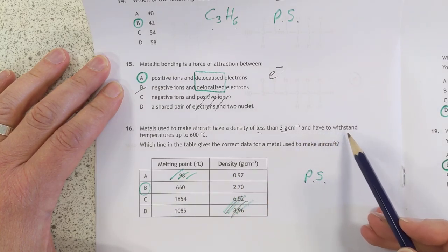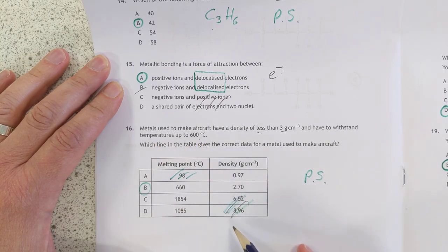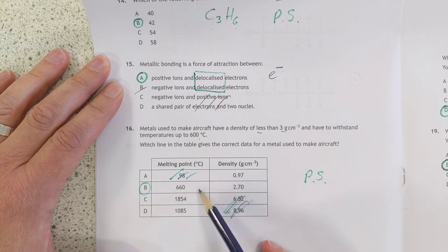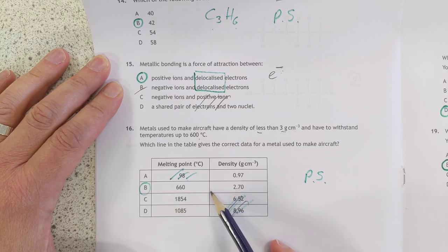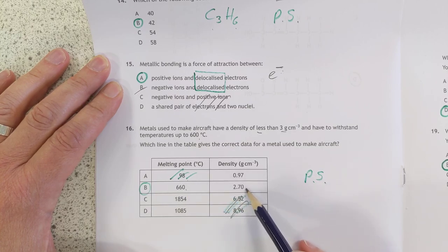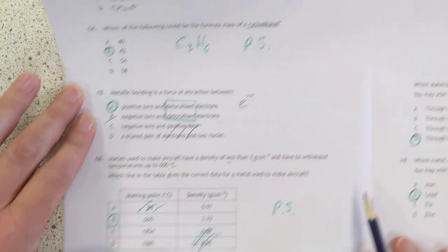The metals have to withstand temperatures of up to 600 Celsius. So metal A melts at 98. That is definitely out. If I remember correctly, that's actually sodium. This is probably aluminum. But anyway, there's A, because it melts above 600, and it's a density of less than 3. So that's the answer.